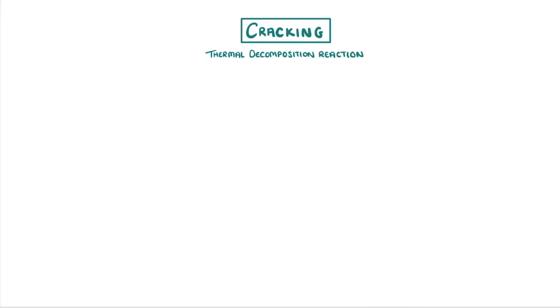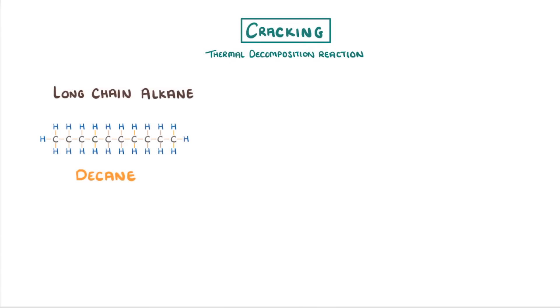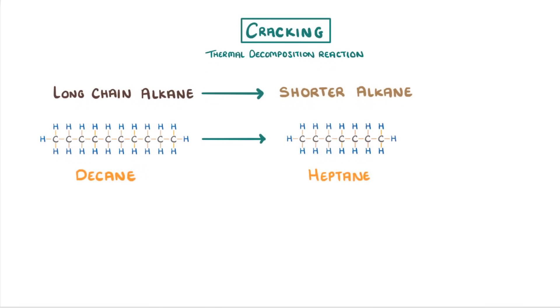As well as knowing these different types of cracking, you also need to be able to write balanced chemical equations for the cracking of long chain alkanes. The equation for this is that you take your long chain alkane, for example decane, and it will go to form a shorter alkane molecule, like heptane, and an alkene, which in this case would be propene. The important thing to remember here is that the number of carbons and hydrogens on each side has to be the same, just like with any other balanced equation.